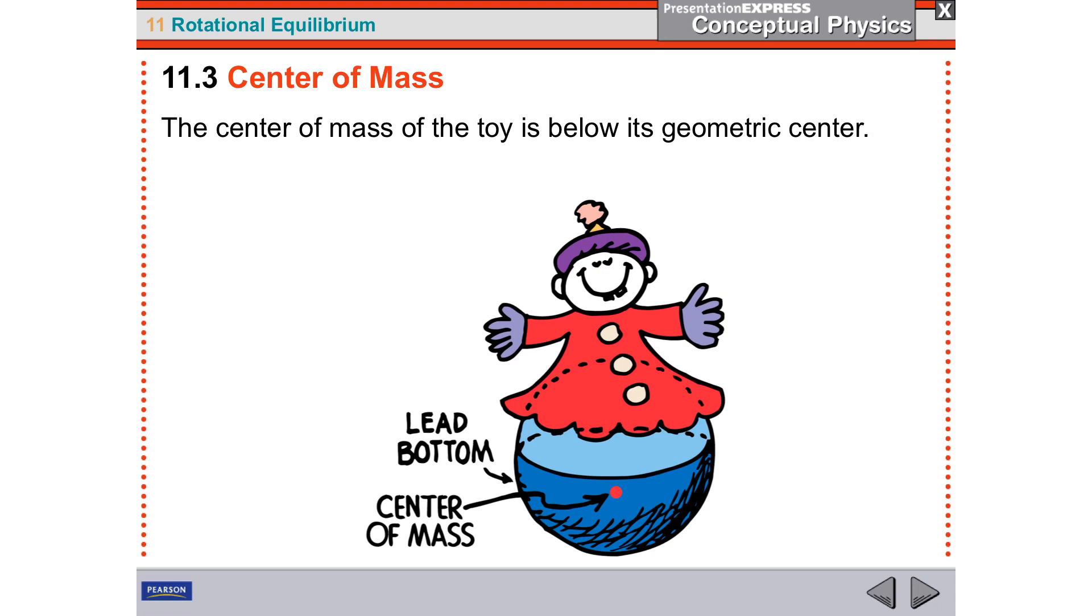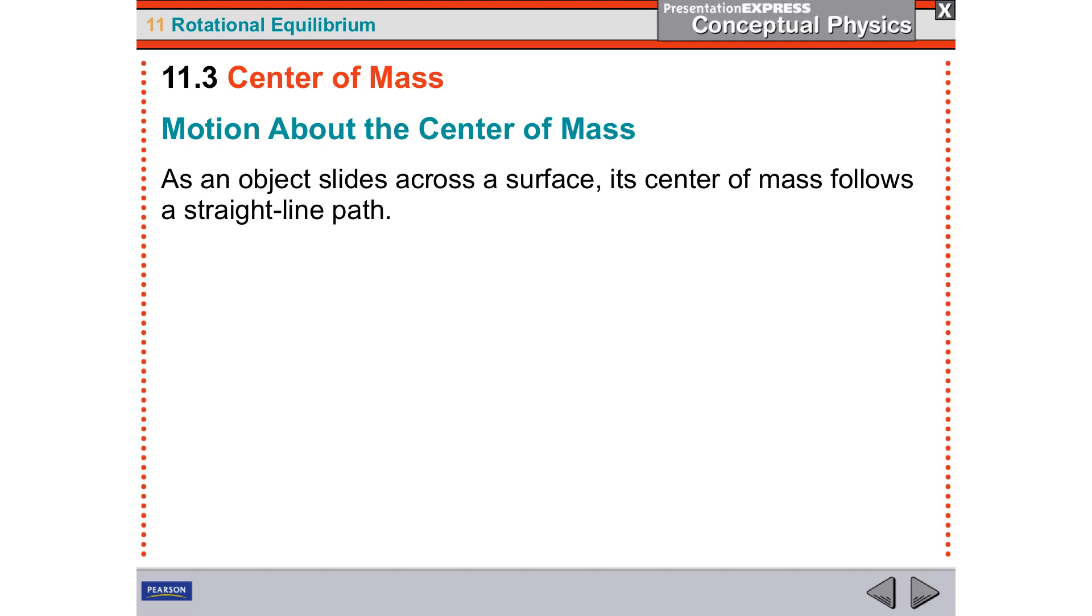When we were kids, we had weebles, which were little guys with round bottoms that never fell down. And the reason why they would never fall down is because their center of mass was so low that they would always right themselves up above the center of mass. So they would never topple over. So what you're going to see is later when we talk about falling objects, things will fall over when the center of mass is not above their base. But if the center of mass is really, really low, then most of the time they can't fall over, especially if you were to have a round bottom where they can stabilize themselves.